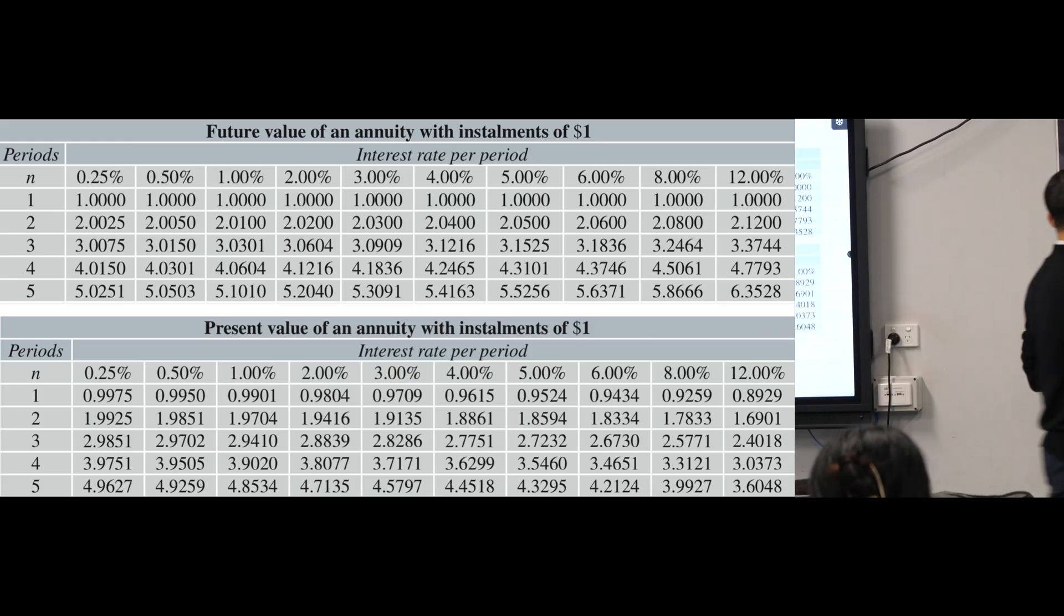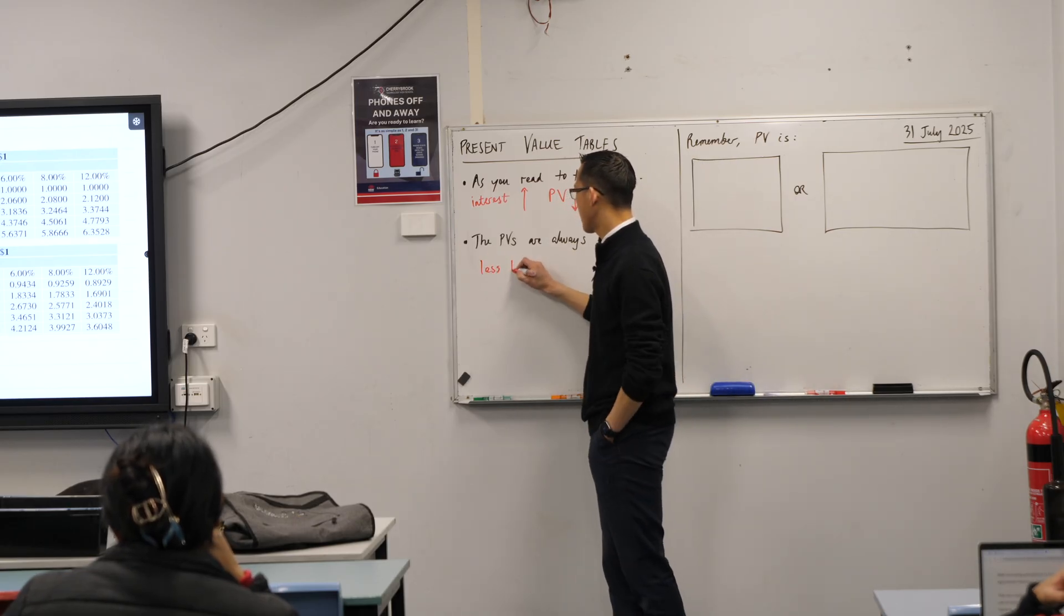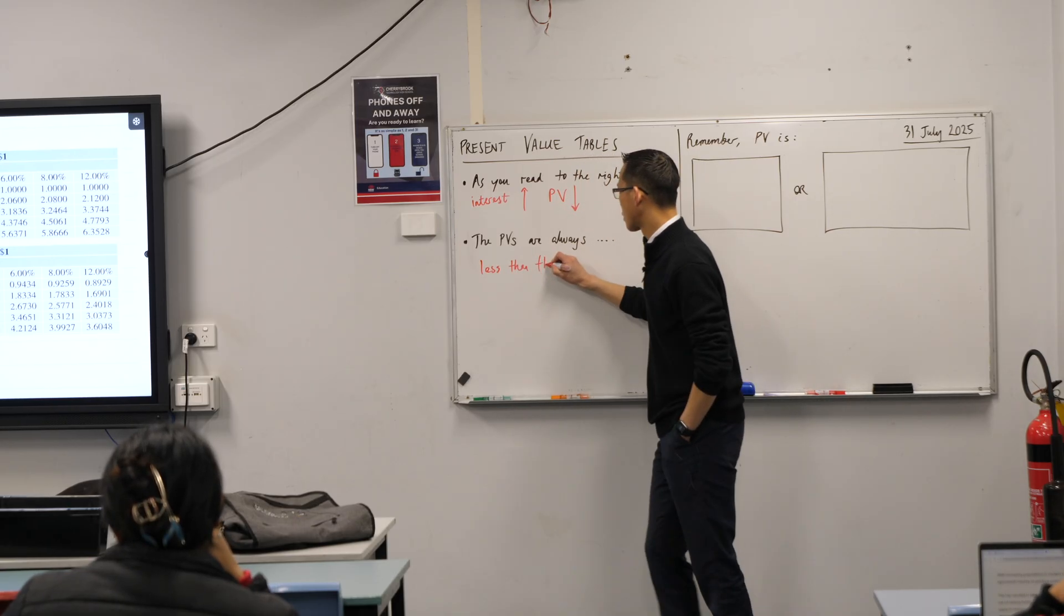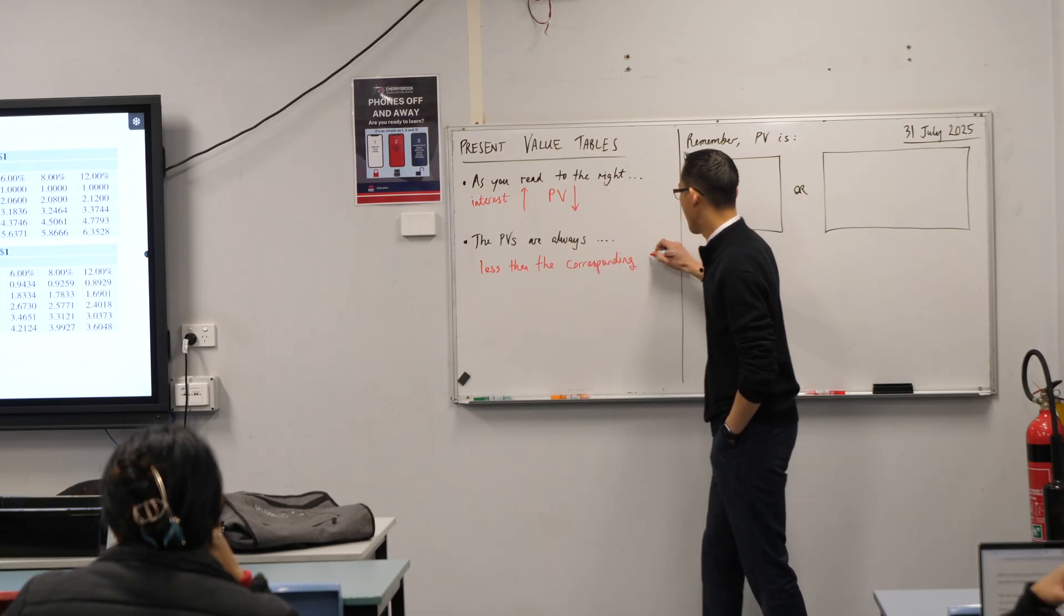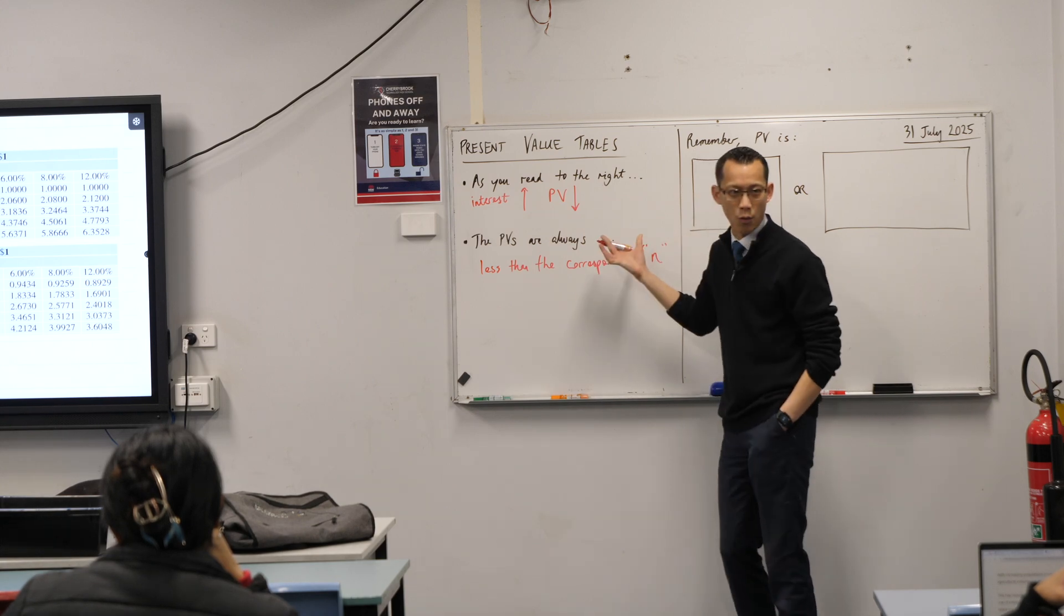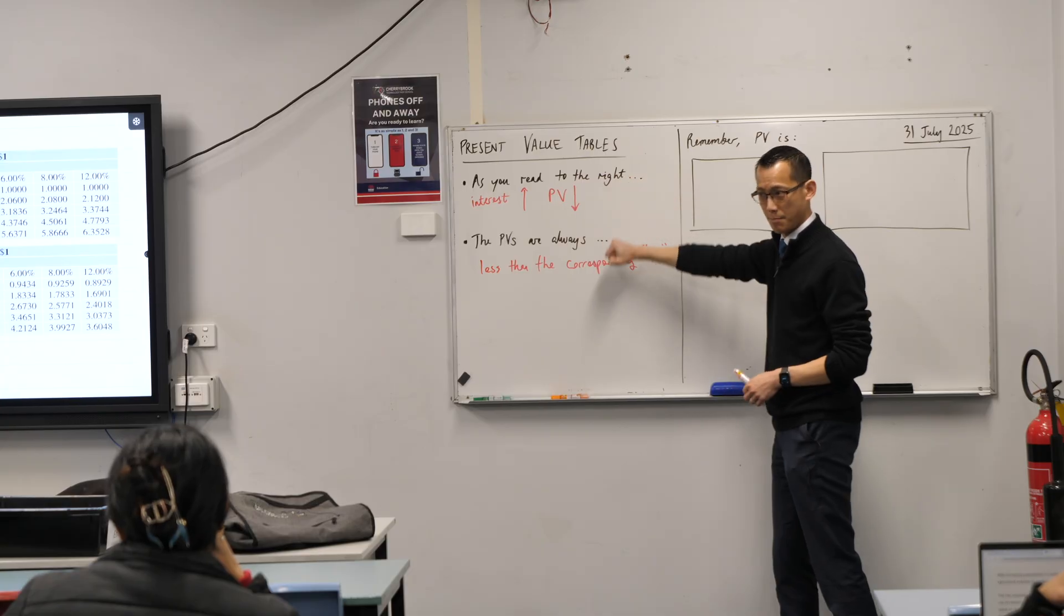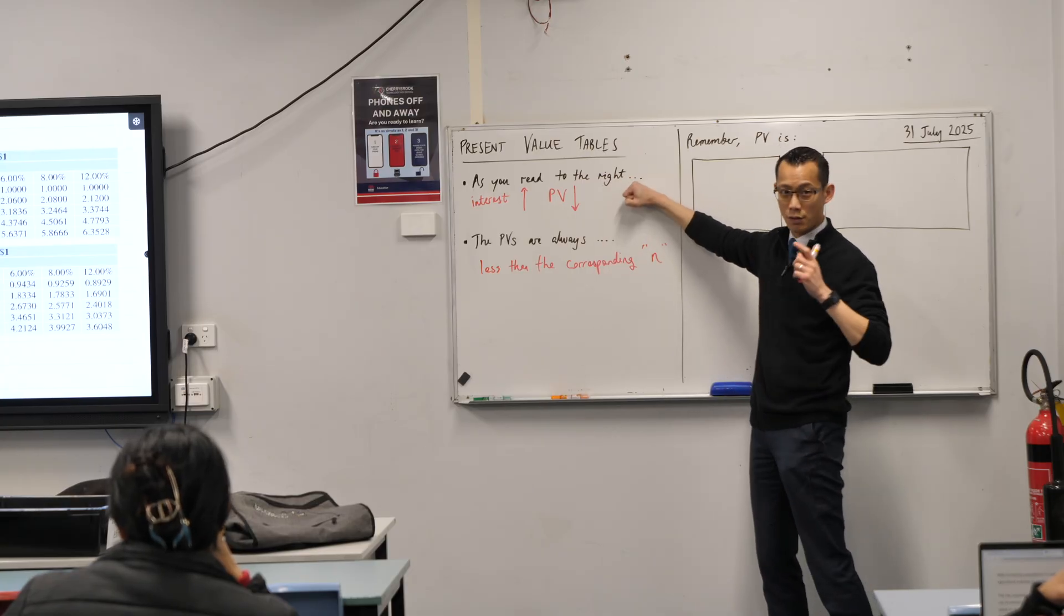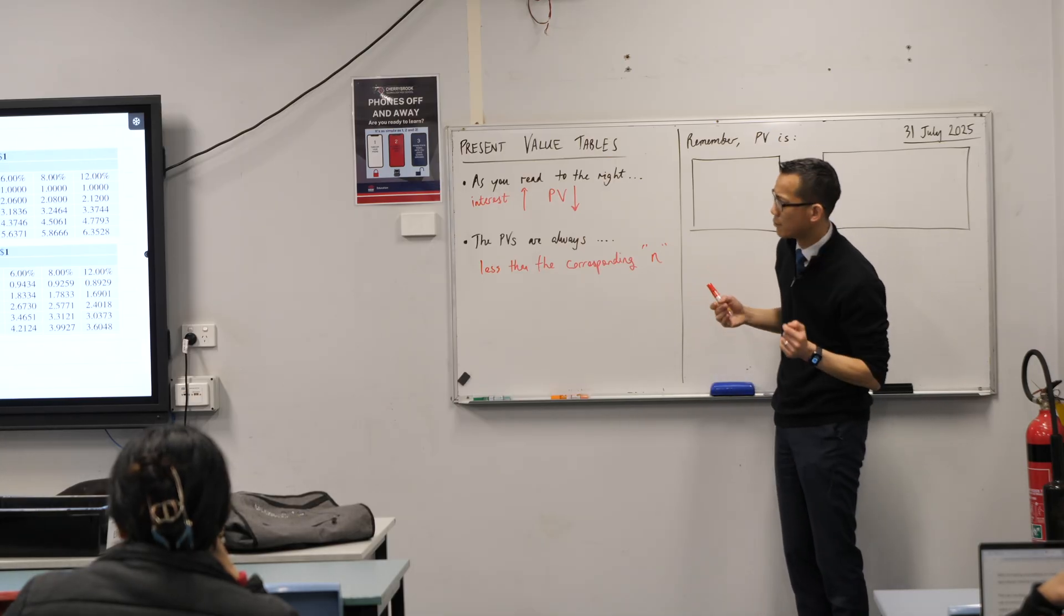So this is also important to note out, the present values are always less than the corresponding time period, but I'm just going to say n, because that's how we're denoting time period. These two points are really important to note down, because if you're like me, the very first time I saw a table like this, I was kind of like, what on earth is going on here?